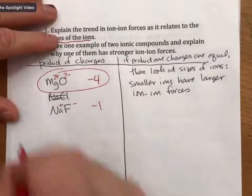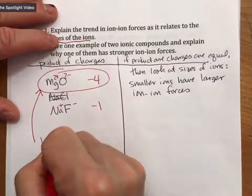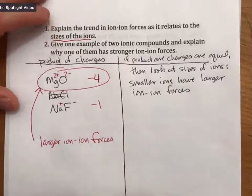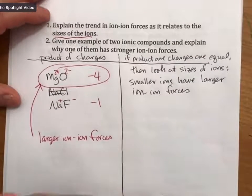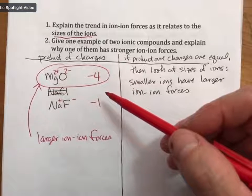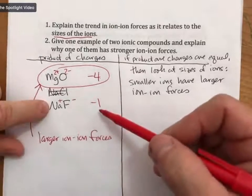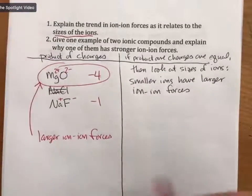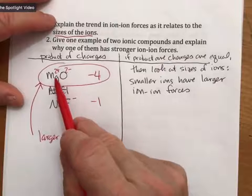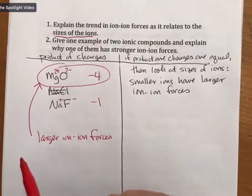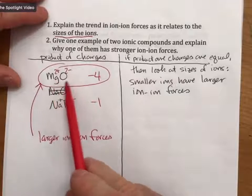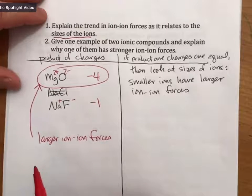So, we would say that magnesium oxide has two things. One is, it has the larger ion-ion forces. It's also true, though it's not necessarily part of this class, that MgO has four times the ion-ion forces of sodium fluoride. And that's all related to Coulomb's law from physics class, because you're basically treating these as charges that attract each other. And again, we don't have to know that for this course. But it is true that it's four times greater, because the product of charges is four times greater.